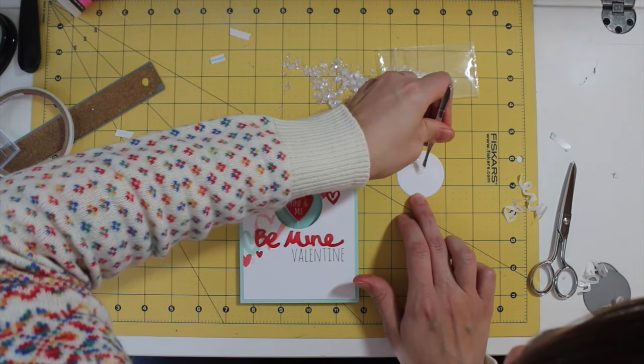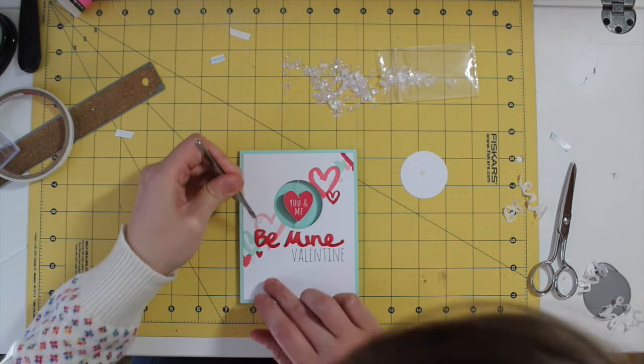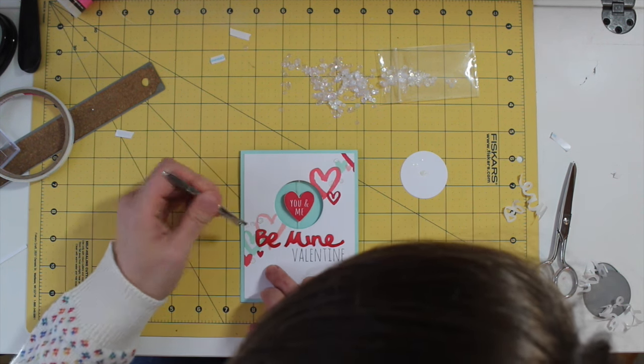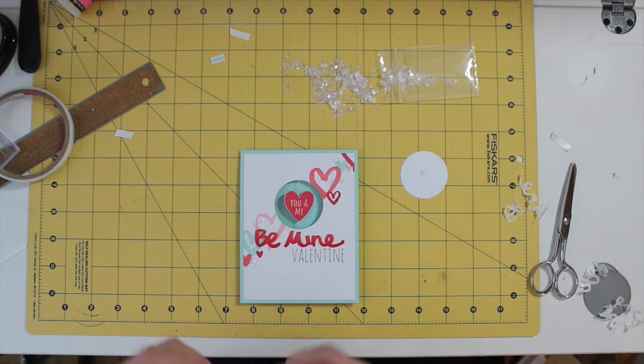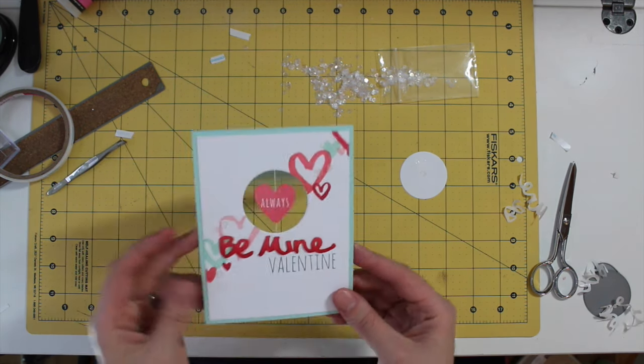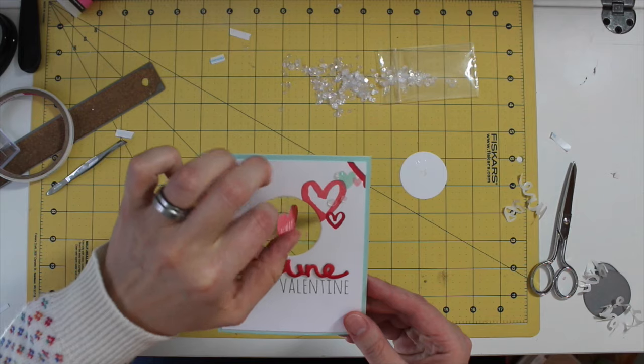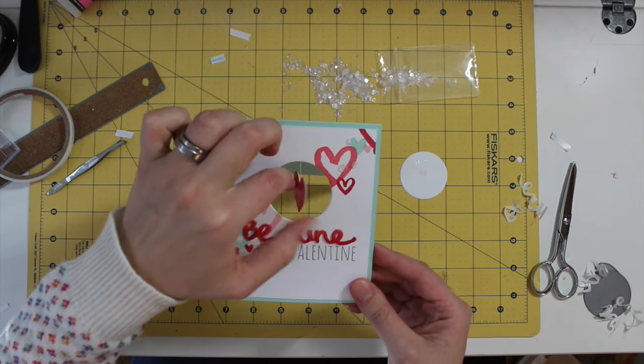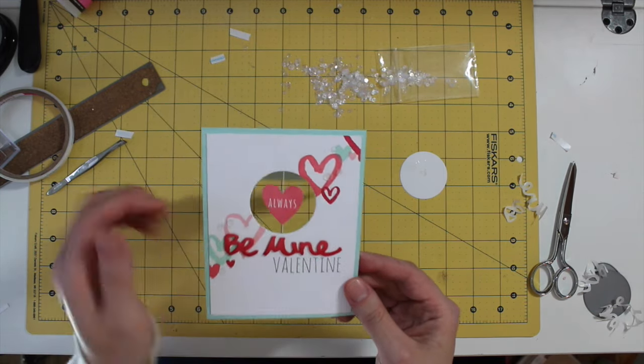And now's the time to do any embellishing too. So I'm going to add a few sequins. These are from the Make It, Mark It Mini Kit, the Sunshine and Rainbows Mini Kit, and I'm just using glossy accents to adhere them.